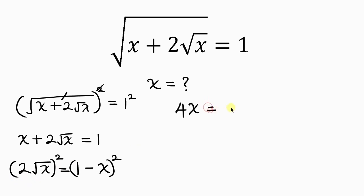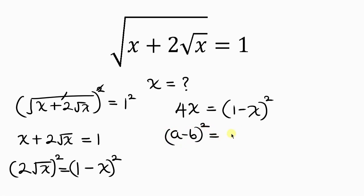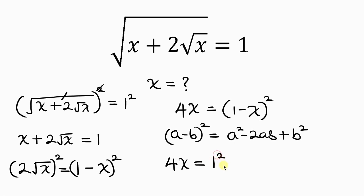This is equal to the right hand side: (1 minus x) squared. The right hand side is of the form (a minus b) squared, which expands as a squared minus 2ab plus b squared. So we have 4x equal to 1 squared minus 2 times 1 times x plus x squared.